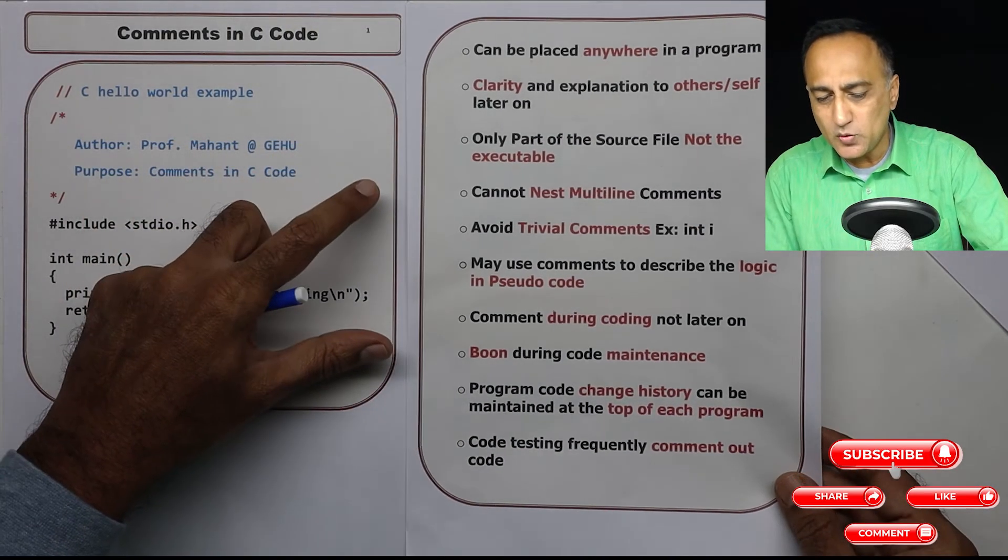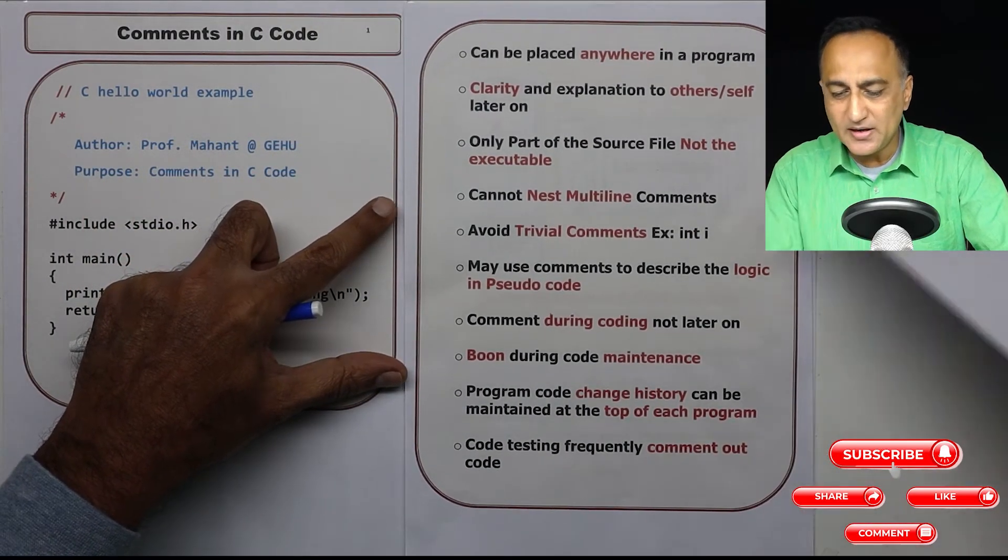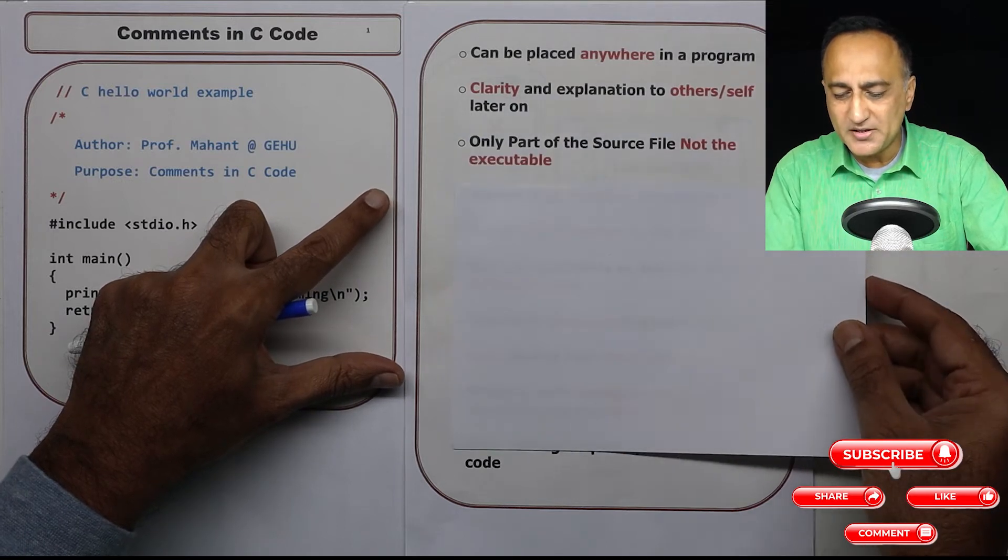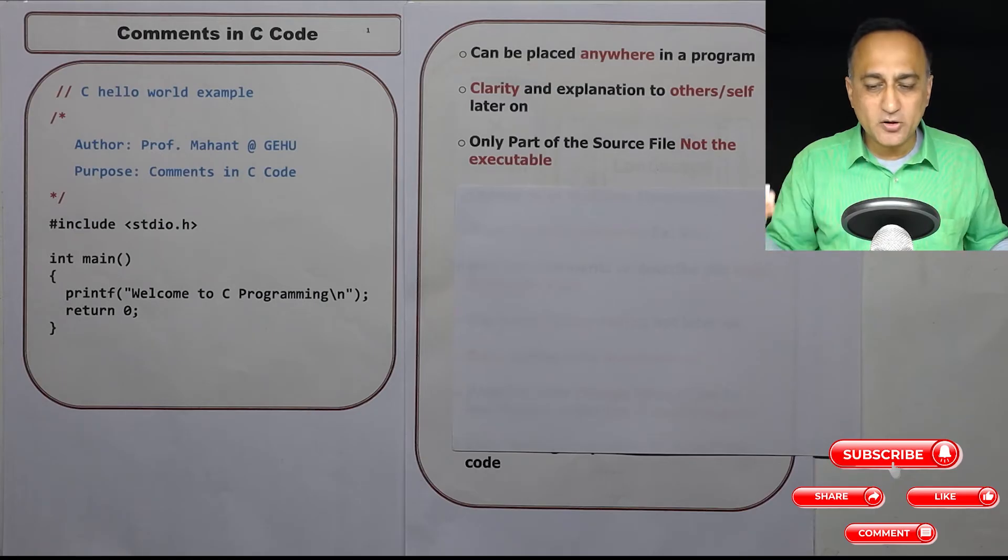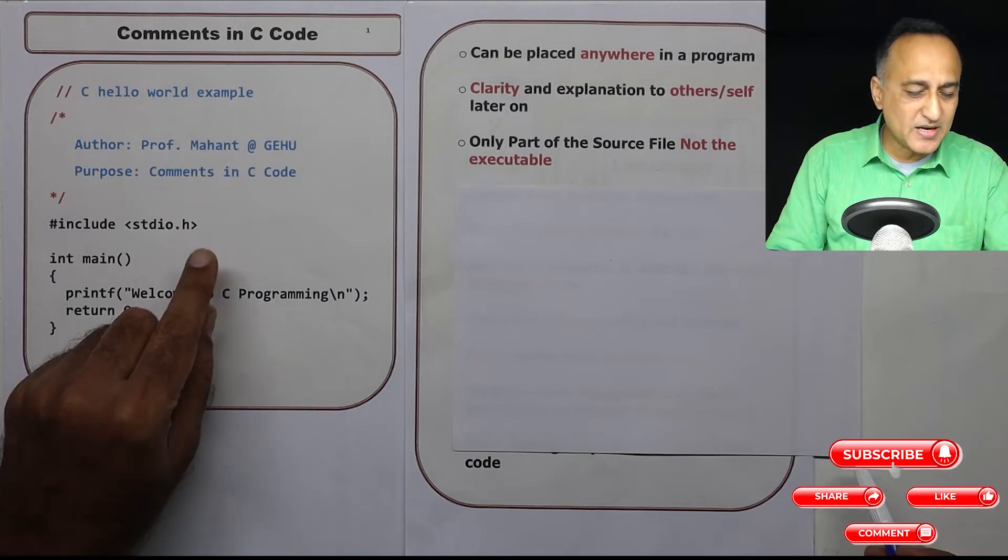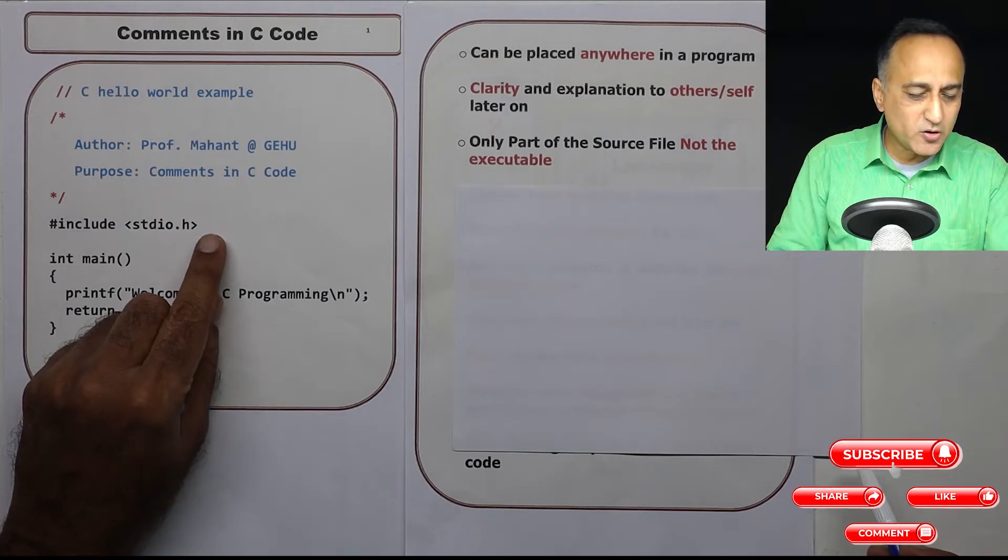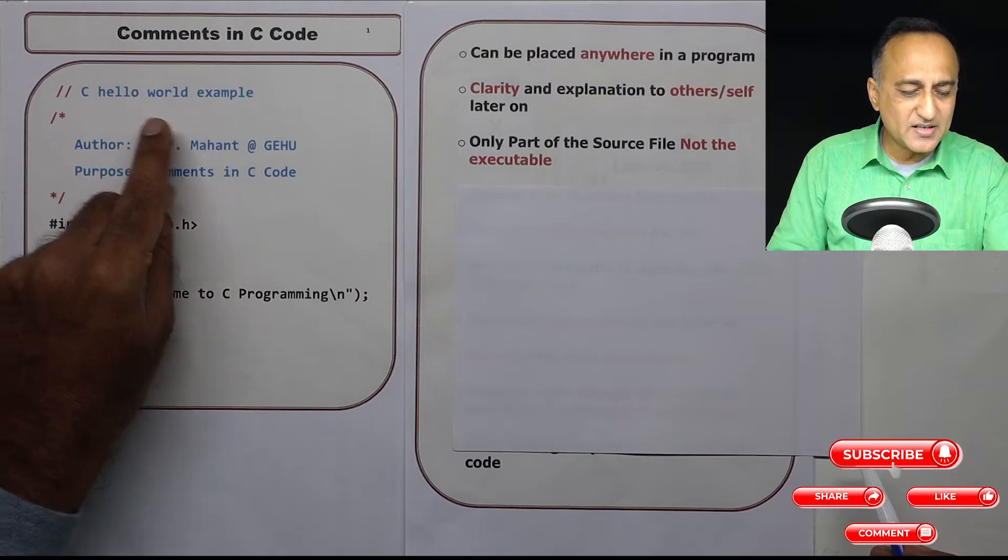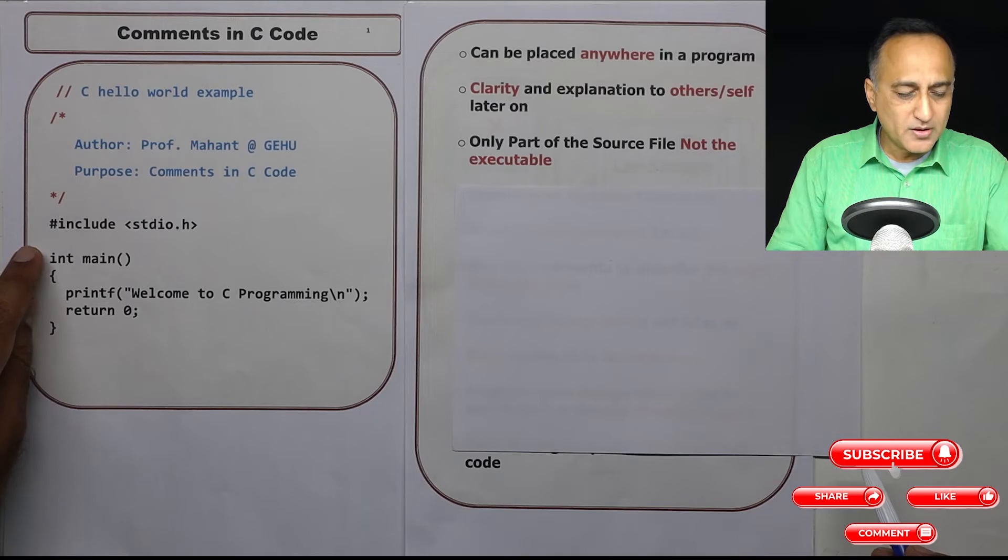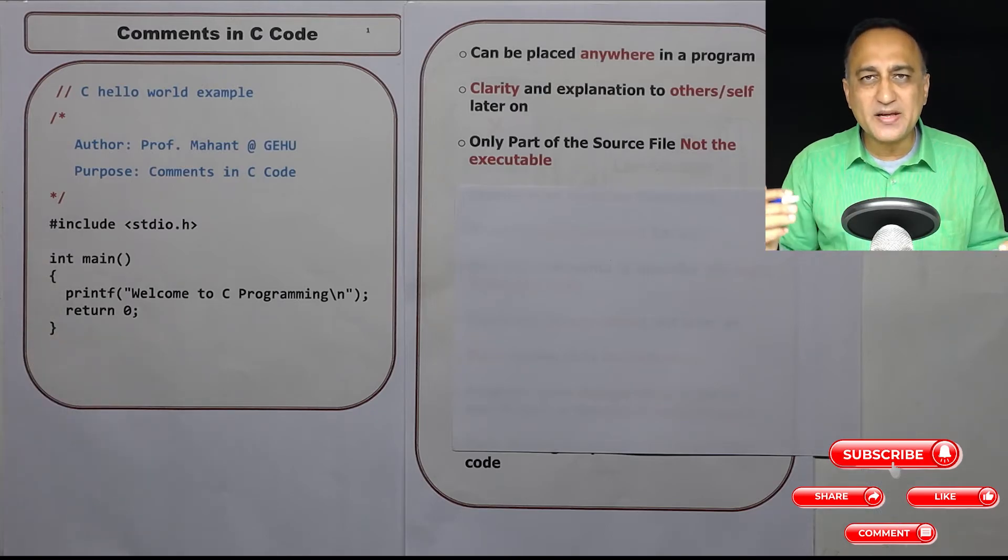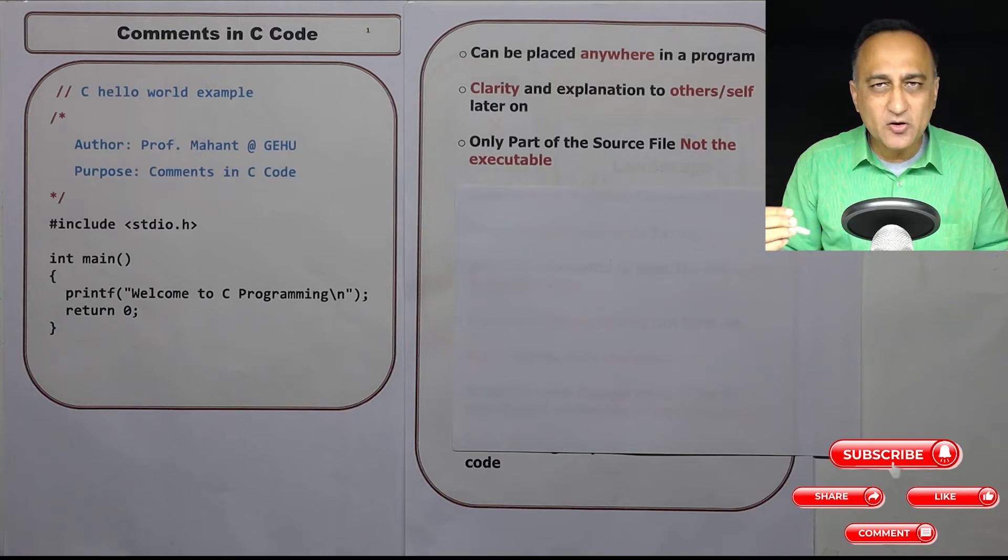In order to understand the role of comments, let's take a look into the number of points that comments play in your code. The first thing is you can place comments anywhere in your C code. For example, after this stdio.h you could put double slash and write C hello world example, or you could put the multi-line comment starting here and ending here. So comments can be placed basically anywhere in your code.